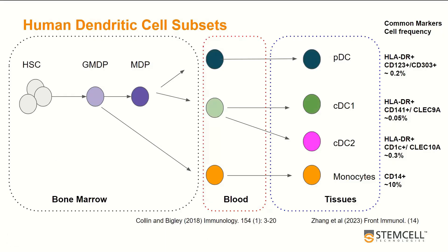Human dendritic cells are actually a heterogeneous population of immune cells, derived from a common progenitor cell in the bone marrow. Upon entering the blood, these cells differentiate into plasmacytoid cells, otherwise known as pDCs, or two types of classical DCs, known as cDCs. Each DC subset expresses a unique set of phenotypic markers and has distinct functional properties. The frequencies of the DC subsets are extremely low when compared to other circulating cell types such as monocytes.